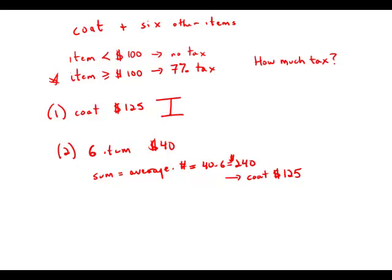So this is a very rare case where even though we're trying to ignore statement number one, statement number two gives us enough information that we can come up with statement number one by ourselves. So now we know that the coat is $125, we know that these other six items have an average of 40, but here's the thing.